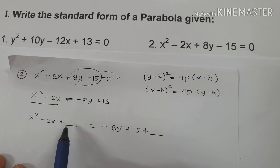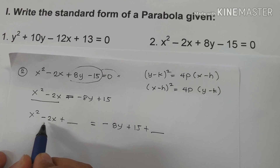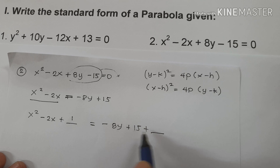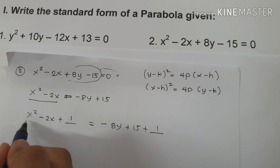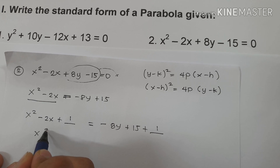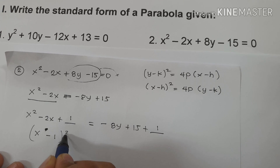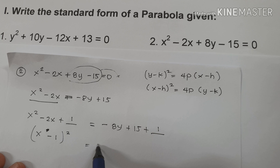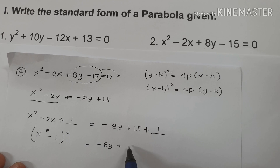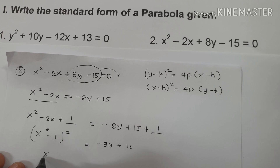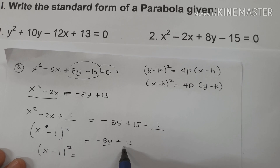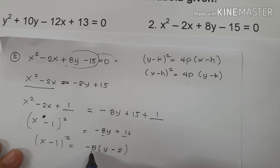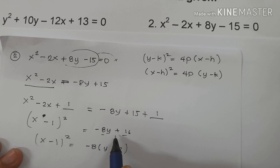Whenever we add on the left side, we add on the other side. We divide negative 2 by 2, which gives negative 1, and negative 1 squared is 1. So we add 1 to complete the trinomial and add 1 to the other side as well. Taking the square root gives us x minus 1 squared. On the right side, negative 8y plus 15 plus 1 equals negative 8y plus 16. We factor by negative 8: negative 8 times y minus 2, since negative 8 times y is negative 8y and negative 8 times negative 2 is positive 16.